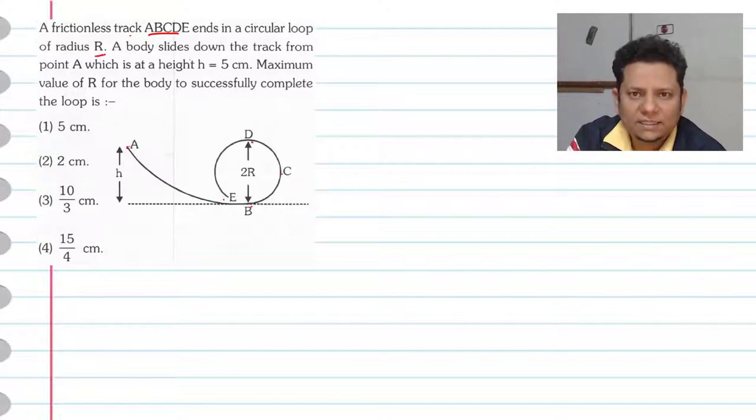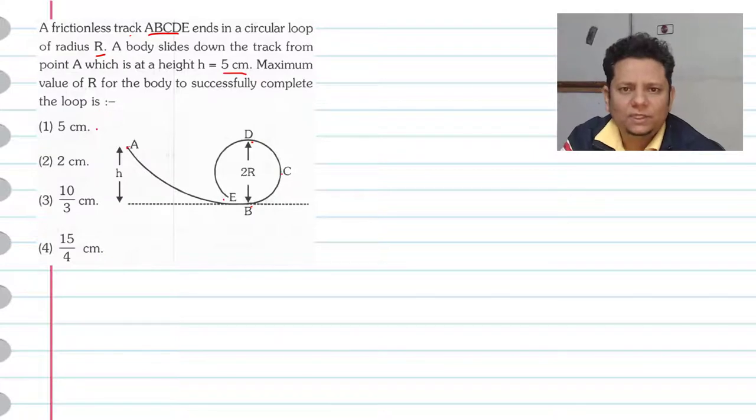It ends in a circular loop of radius R. A body slides down the track from point A which is at a height of 5 cm. The question is: maximum value of R for the body to successfully complete the loop is 5 cm, 2 cm, 10 by 3, or 5 by 4.